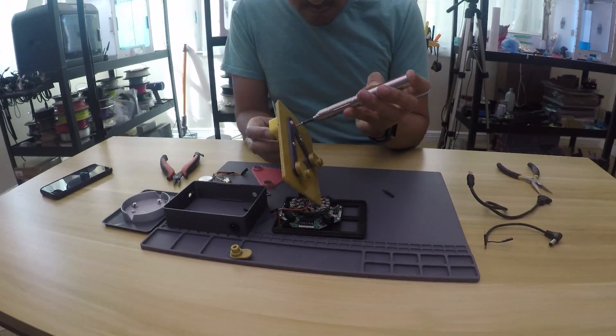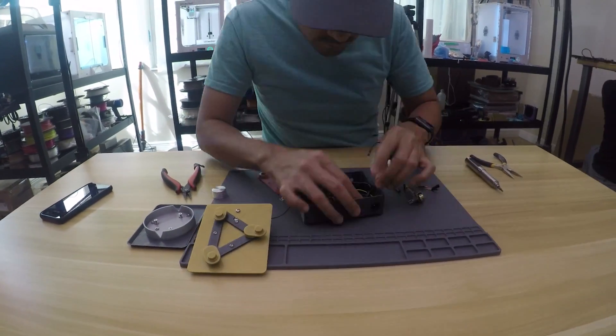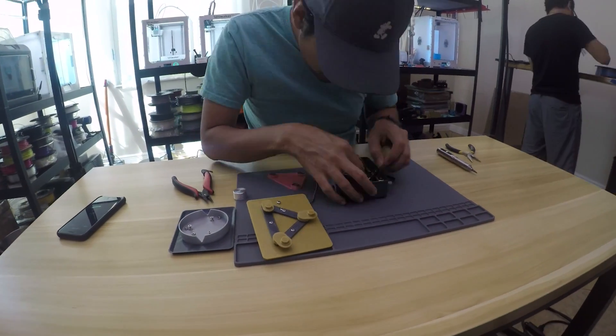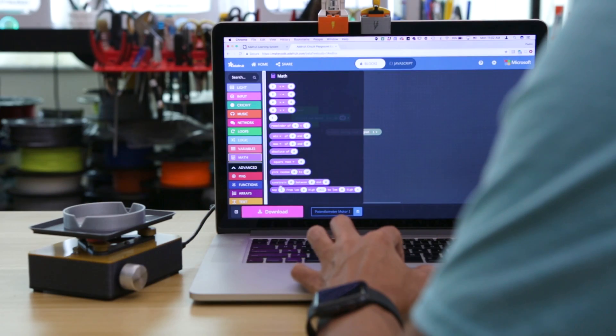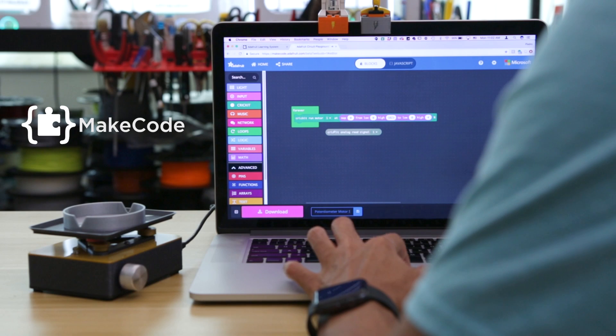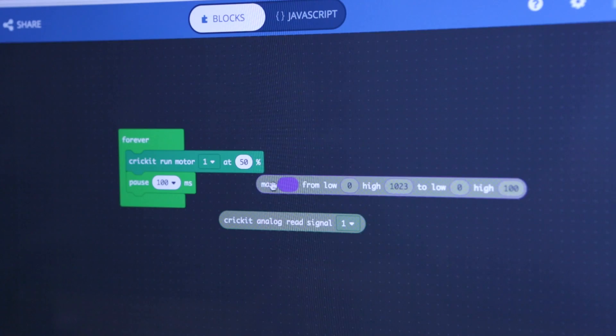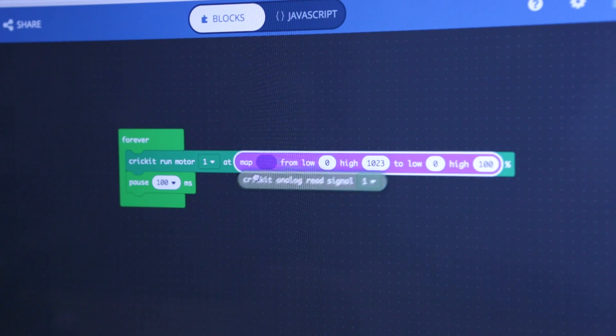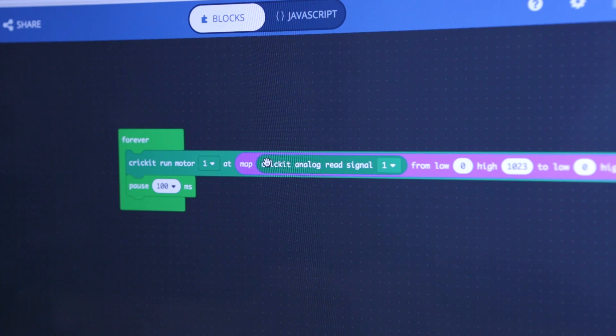Commercial equipment can be expensive so we think a DIY build makes for a nice weekend project. We used Microsoft Makecode to program the Adafruit Cricket and Circuit Playground Express. Here we mapped the potentiometer to the motor so that we could control and adjust the speed.